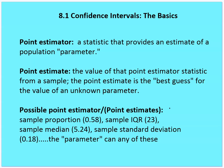Sample IQR would be the point estimator with an estimate of 23. Sample median would be the estimator with an estimate of 5.24. Sample standard deviation would be the estimator with an estimate of 0.18. So the point estimate or parameter for the population can be any of these.